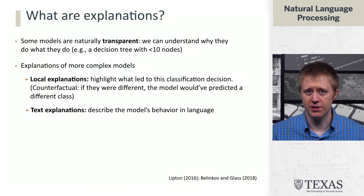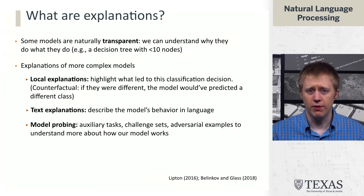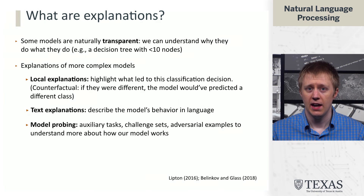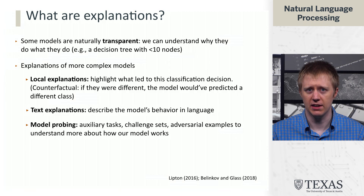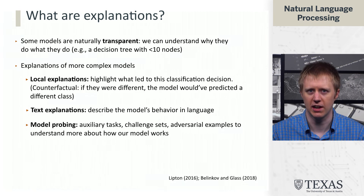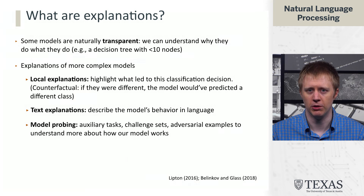We can also have text-based explanations, where the model actually gives a text description of why it's behaving the way it's behaving. Finally, we can probe our models — this doesn't provide an explanation per se, but gives some idea about the intermediate structure of the computation going on. We'll primarily talk about auxiliary tasks, but these are all ways of understanding what the model can and can't do, giving us a more refined sense of its behavior. Over the next few segments, we'll talk about these different types of explanations and try to understand why they can help us build better NLP systems.